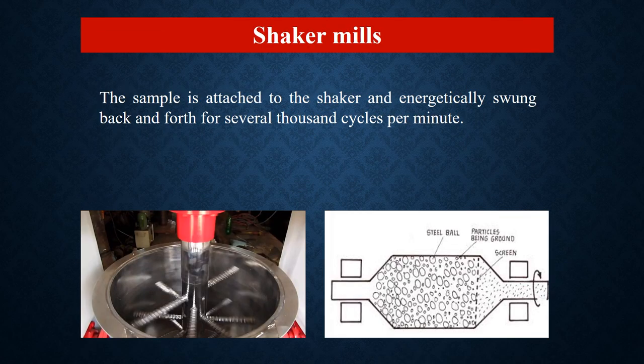Here is the shaker mill. The sample is attached to the shaker and energetically swung back and forth for several thousand cycles per minute. Thus the material is converted by physical process, using energy, into nanomaterial.